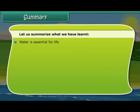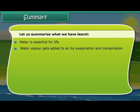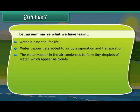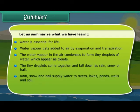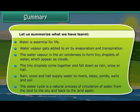To summarize: water is essential for life. Water vapor gets added to the air by evaporation and transpiration. The water vapor in the air condenses to form tiny droplets of water, which appear as clouds. The tiny droplets come together and fall down as rain, snow or hail. Rain, snow and hail supply water to rivers, lakes, ponds, wells and soil. The water cycle is a natural process of circulation of water from the land to the sky and back to the land again.